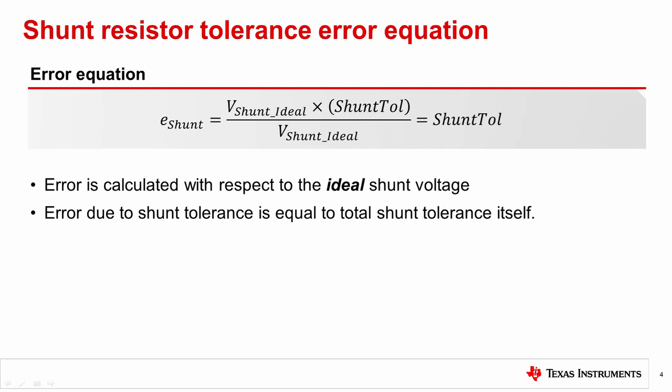The equation to calculate shunt tolerance error is shown here. It is simply the percent deviation of actual input shunt voltage from ideal shunt voltage. V shunt ideal is the product of the load current and ideal shunt resistor value, ignoring the tolerance and temperature drift of the resistor itself. It turns out the error contribution due to shunt is equal to the total shunt tolerance, which includes the initial tolerance plus temperature drift when temperature effect needs to be considered. The total shunt tolerance is expressed in percent. Unless otherwise stated in this presentation, shunt tolerance and total shunt tolerance are interchangeable.